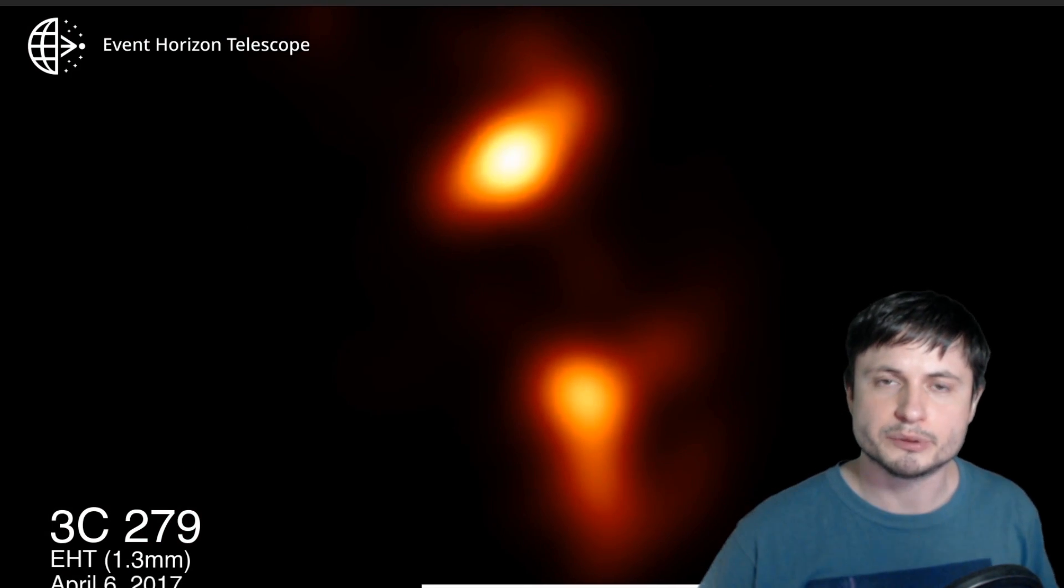But unlike M87 black hole that's about 55 million light years away from us, this blazar is about 100 times as far. It's about 5 billion light years away from us. And the only reason we can see it so well is because of its jet being pointed almost directly at us, which is actually the definition of a blazar.